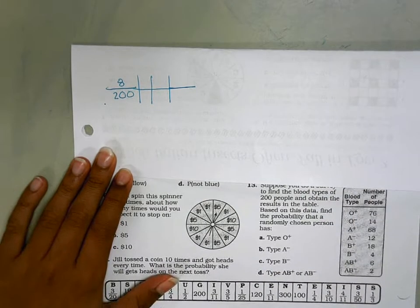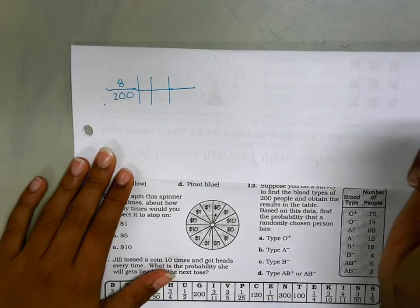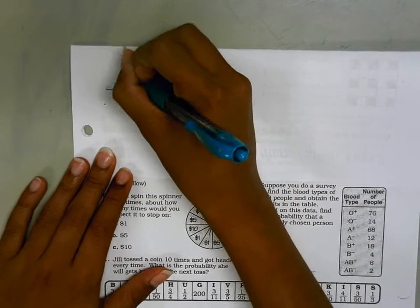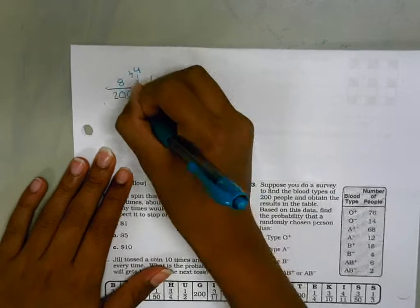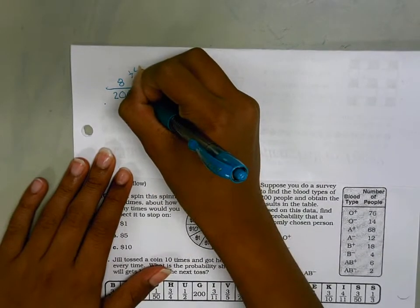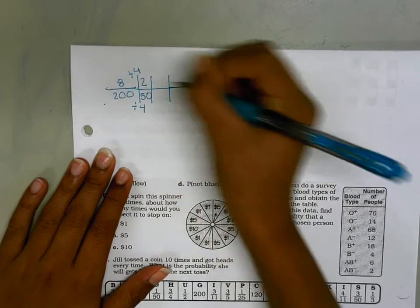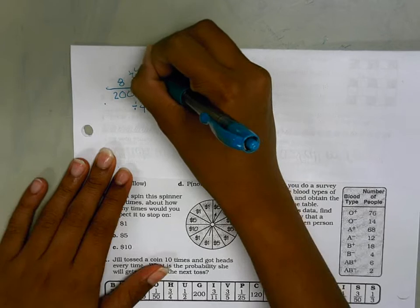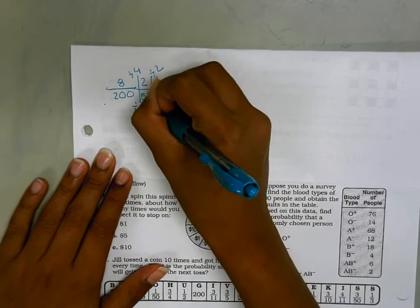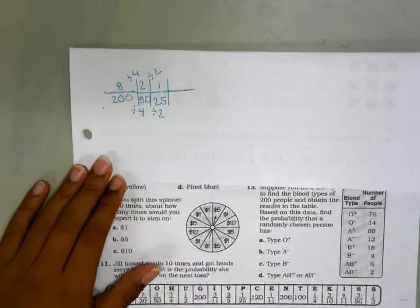To simplify it, I'll divide by 4 to get 2 over 50. Then I'll simplify that by 2 to get 1 over 25.